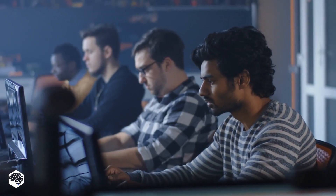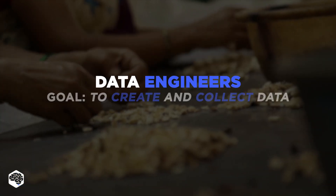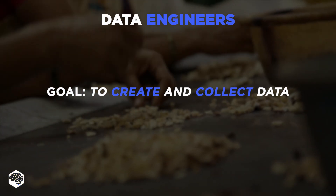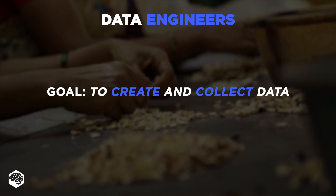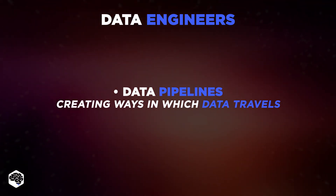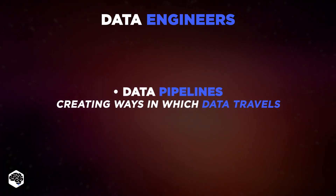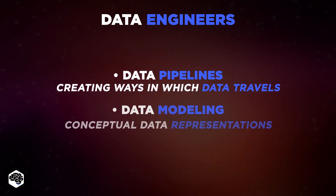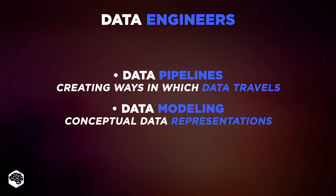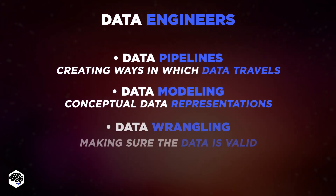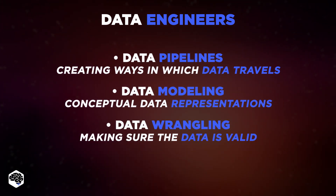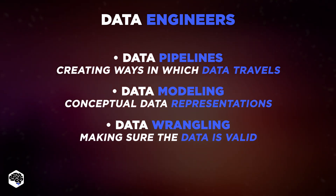Let's review the areas of data engineer and data scientist. The goal of a data engineer is to create and collect data. Among the primary data engineering definitions, we name data pipelines — creating ways in which the data travels through the infrastructure — data modeling, creating conceptual data representations, and data wrangling, making sure that the data used in the infrastructure is valid and high-quality.